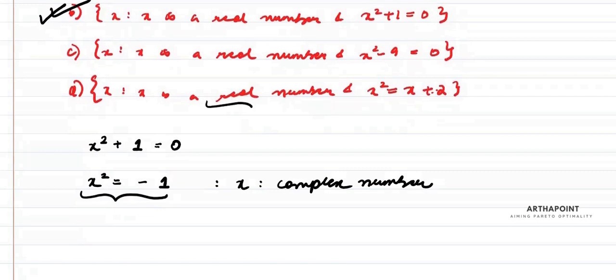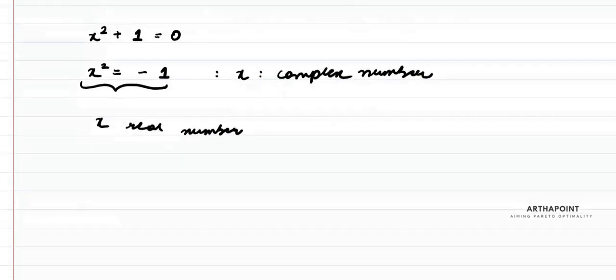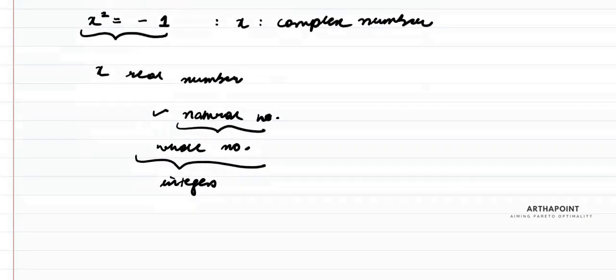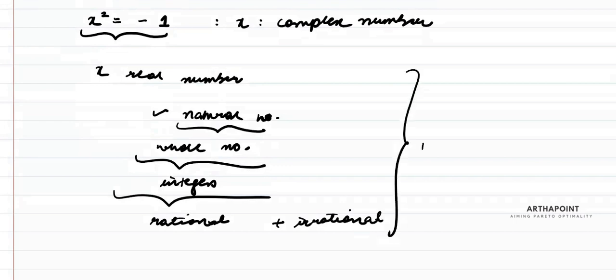But x is a real number. If x is a real number, then what are real numbers? Real numbers consist of natural numbers combined with zero to give you whole numbers, combined with negative numbers to give you integers, combined with fractions to give you rational numbers and irrational numbers.